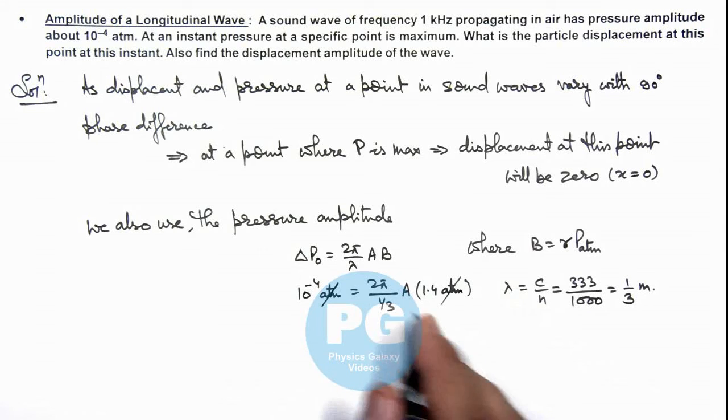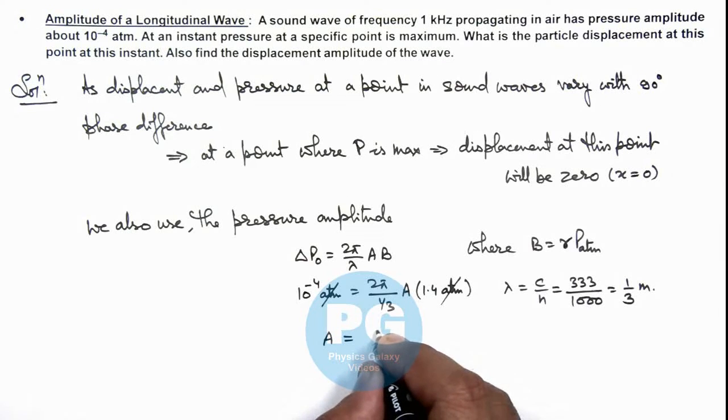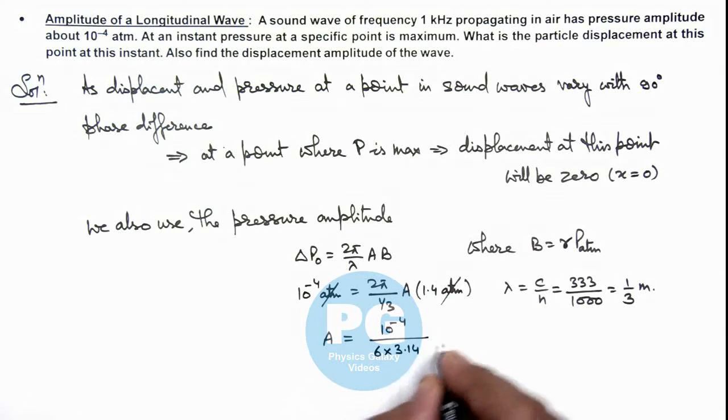And on simplifying, the value of displacement amplitude we are getting is 10 to the power minus 4 divided by 6 multiplied by 3.14 multiplied by 1.4.